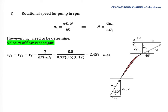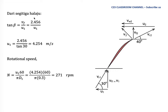Since Vf is constant, this value applies to both Vf1 and Vf2. From the simplified inlet velocity triangle, tan(30°) = Vf / U1, so U1 = 2.456 / tan(30°) = 4.254 m/s. Substituting into N = 60·U1 / (π·d1), the rotational speed is approximately 271 RPM.